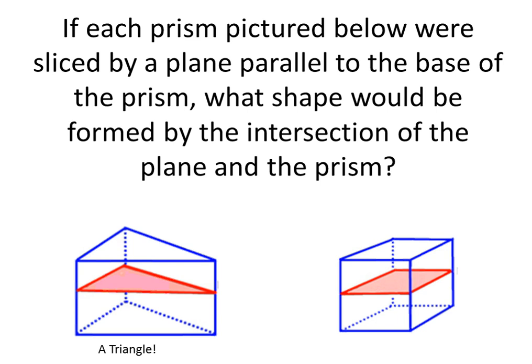Next, we have a rectangular prism. The rectangles are the bases, they're the ends of the prism. So if we were to slice it parallel to the rectangles, the shape that would be formed by the intersection of the plane and the prism would be a rectangle.